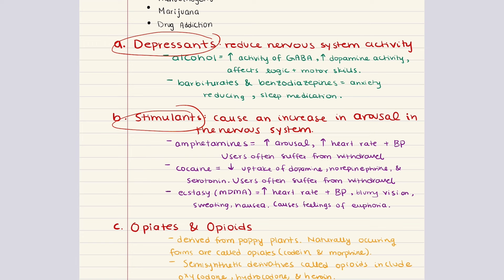Ecstasy also falls under stimulants. It acts as a hallucinogen combined with an amphetamine — a designer amphetamine with mechanisms and effects similar to other amphetamines. Physiologically, ecstasy causes increased heart rate, increased blood pressure, blurry vision, sweating, and nausea. Psychologically, it causes feelings of euphoria, increased alertness, and an overwhelming sense of well-being and connectedness, hence why it's a popular club or rave drug.